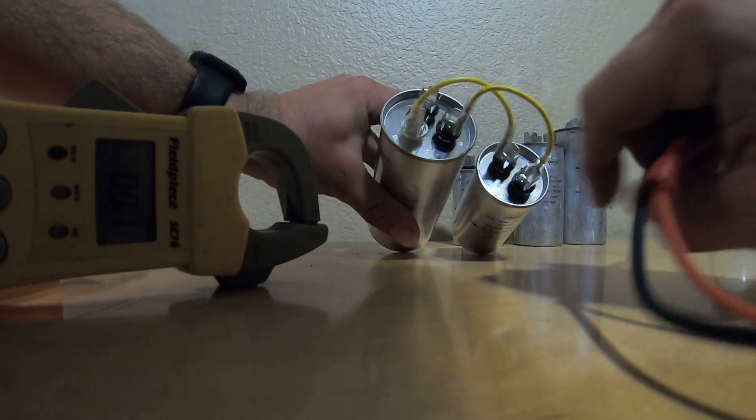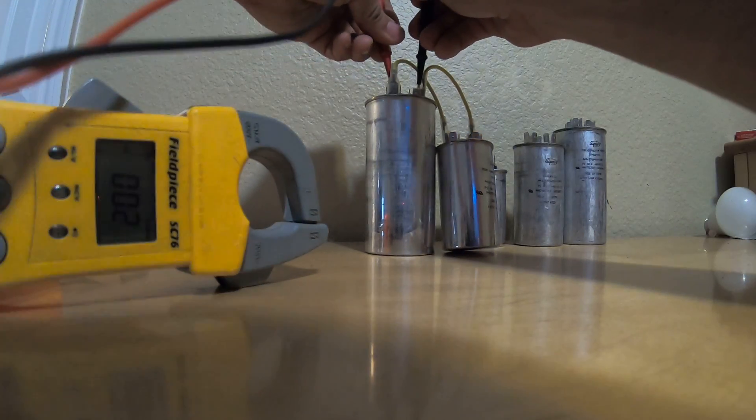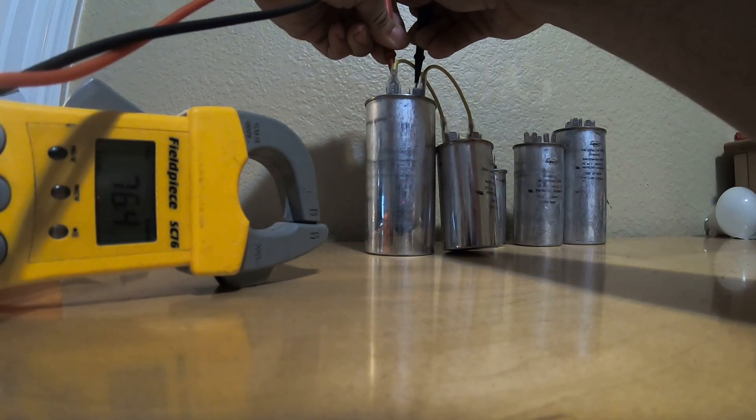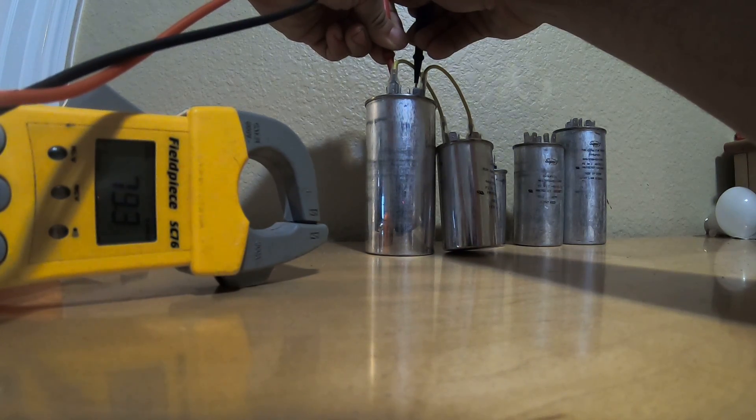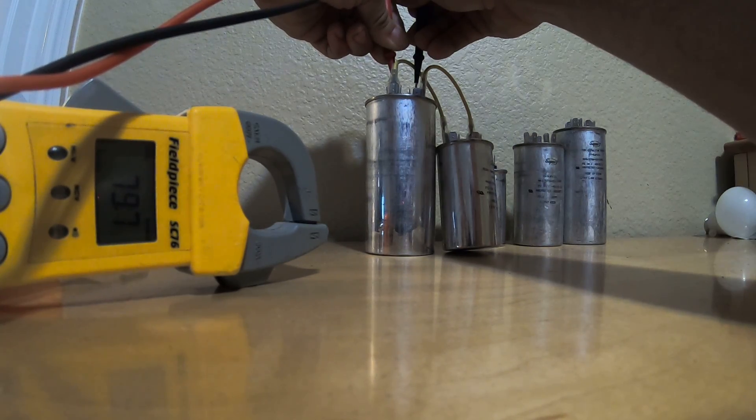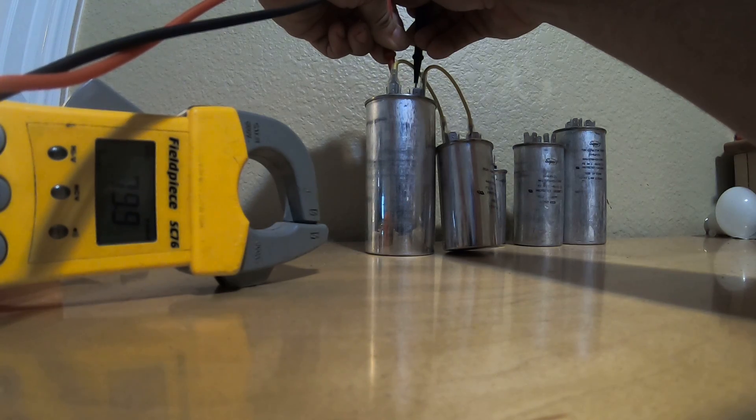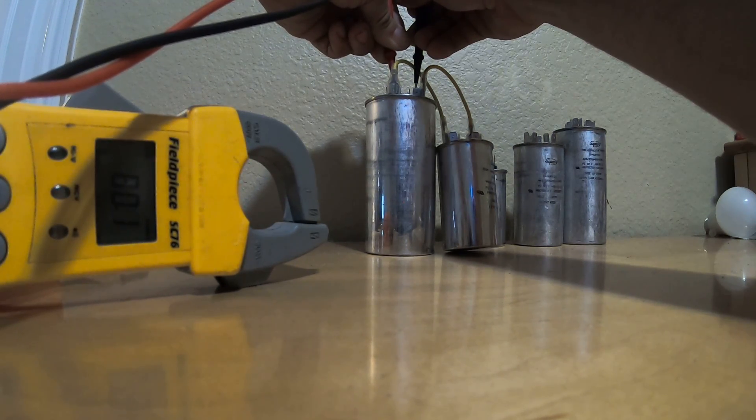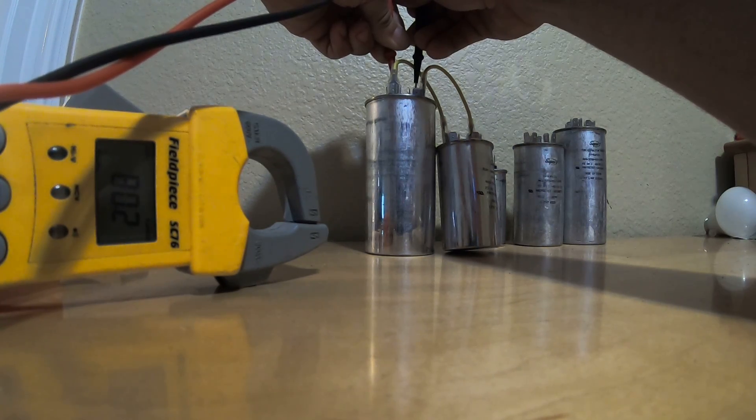Now all you have to do is hook this capacitor up like normal. Forget that these are even here. If you want to test it first, just go from common to Herm and you should read 80 microfarads. You know what, I'm going to redo this video too so y'all can see a little better. Actually, I'm going to do another video to show you how to wire up a PSC blower motor, which stands for permanent split capacitor blower motor at 115 volts. I don't know if y'all can see that, it's showing 80 microfarads.